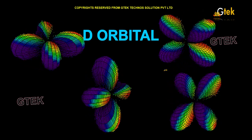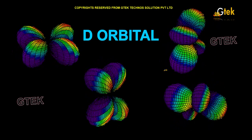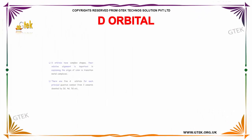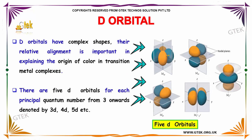Let's move on to the d-orbital. D-orbitals will be having complex shapes. The relative alignment is important in explaining the origin of color in transition metal complexes. There are 5 d-orbitals for each principal quantum number from 3 onwards.